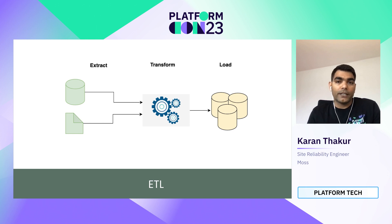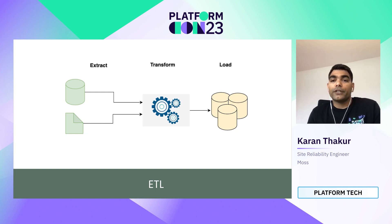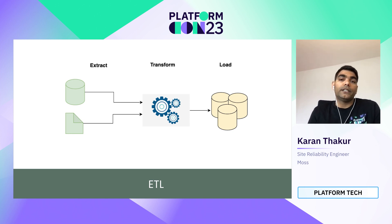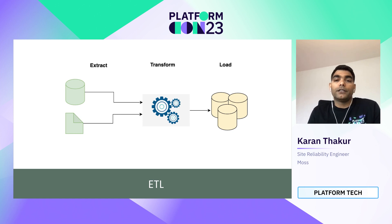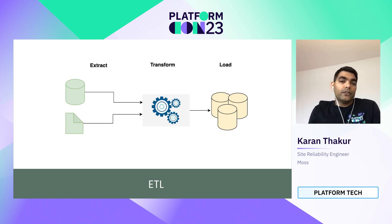The first step is called Extract — the process of reading data from different types of sources. Then Transform — converting the extracted data to a particular format to be stored in a data warehouse. Transformation also involves enriching the data using other data in the system. The third step is called Load — the process of writing the data to a data warehouse. Well, it looks simple enough, so what are the challenges?